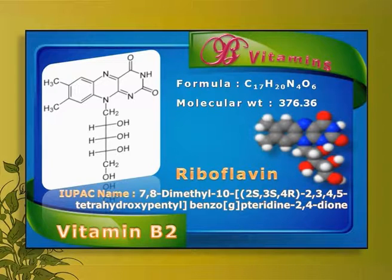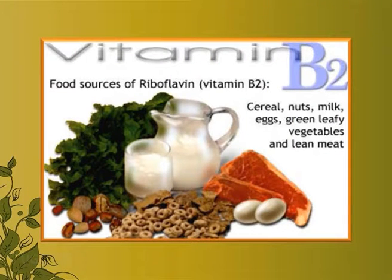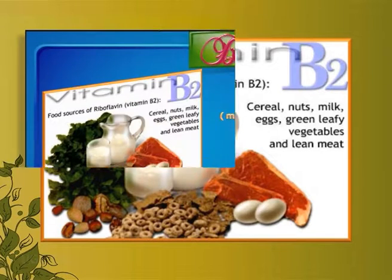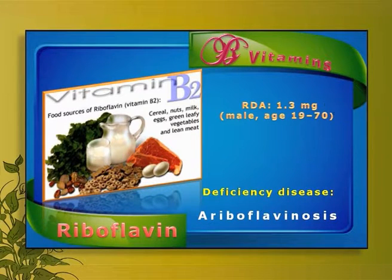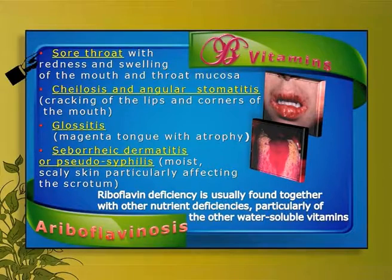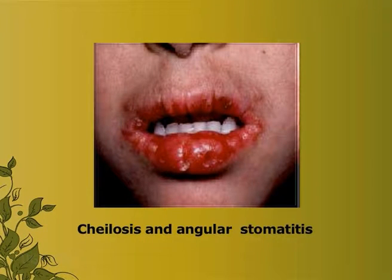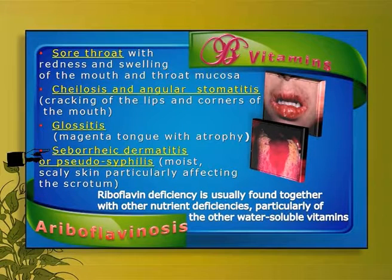Vitamin B2 or riboflavin has a chemical formula of C17H20N4O6 with a molecular weight of 376. Foods rich in vitamin B2 include nuts, milk, cereal, egg, green leafy vegetables and lean meat. The recommended dietary allowance is 1.3 mg and the major deficiency disease is ariboflavinosis. Ariboflavinosis is characterized by sore throat, angular cheilosis, and angular stomatitis — meaning cracking of the lips and cracking at the two corners of the mouth cavity. There is also seborrheic dermatitis characterized by moist, scaly skin particularly affecting the scrotum.